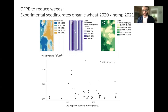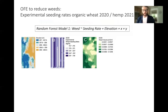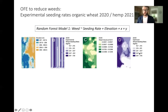After determining that the as-applied rates were spatially autocorrelated, we put them into a random forest model to come up with an optimized seeding rate for minimized weed volume. That is the picture shown in figure D — a map showing what an optimized seeding rate would look like if we were attempting to reduce weed volumes across this field during this year of wheat experimentation.